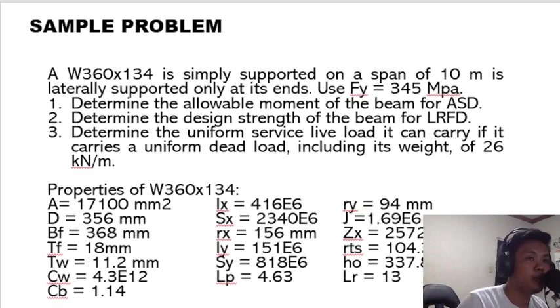Number 1, determine the allowable moment of the beam for ASD. Number 2, determine the design strength of the beam for LRFD. And number 3, determine the uniform service live load it can carry if it carries a uniform dead load including its weight of 26 kN per meter.